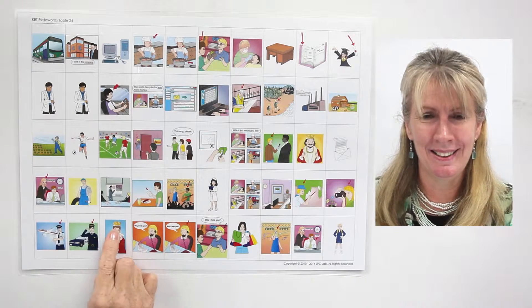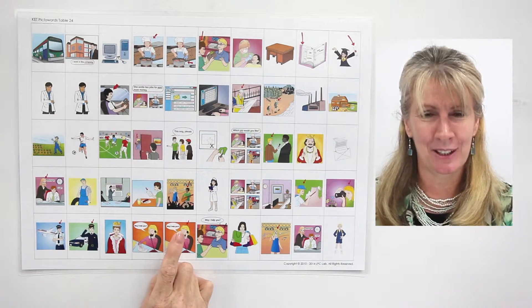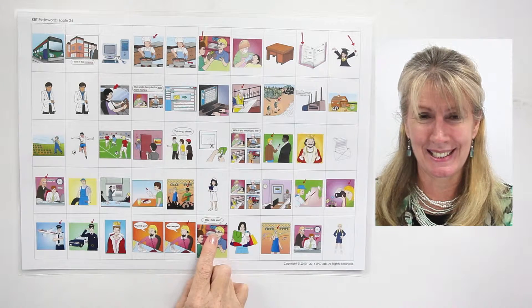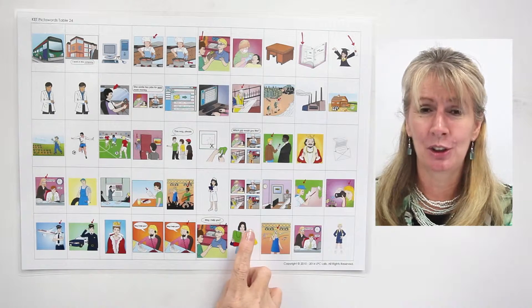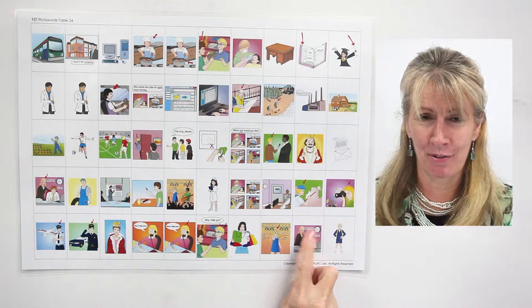Queen. Queen. Receptionist. Receptionist. Secretary. Secretary. Shop assistant. Shop assistant. Shopper. Shopper. Singer. Singer. Staff. Staff. Student. Student. And that's the end of the table — that was a lot of fun, wasn't it! You can do these again anytime you like. I'm Miss Diane, see you again soon, bye bye.